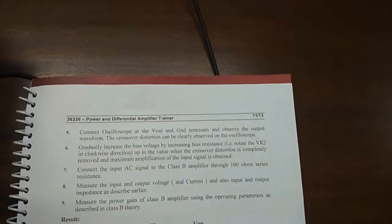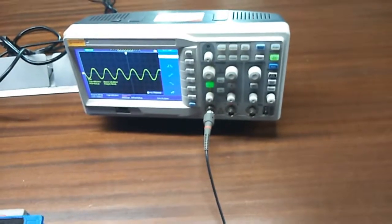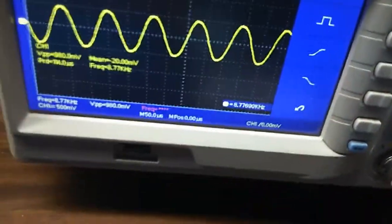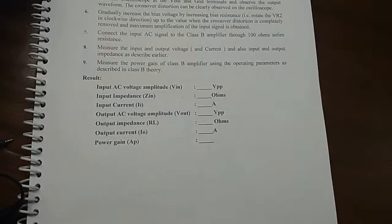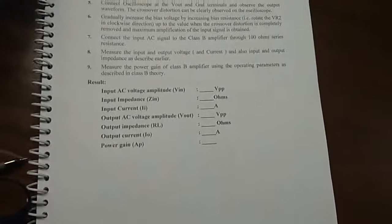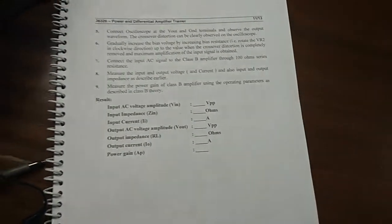And measure the power gain of class B amplifier. Here this will be your output AC voltage, that is almost 980 millivolt, and for input impedance, input current, output AC voltage, output impedance, output current and power gain.